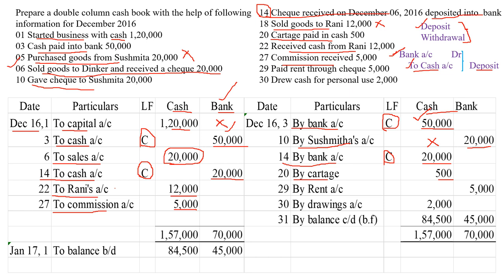Then paid rent through check. We are making a payment — when a payment is made, it should be credited. So in the credit side, by rent. And since we are making the payment through check, in the bank column I am writing 5,000 rupees. If it is a cash payment, we will write it in the cash column. If it is paid through check, we will write it in the bank column.